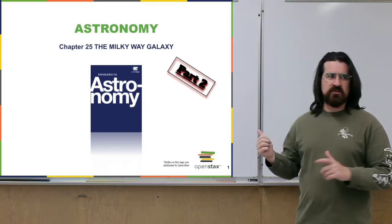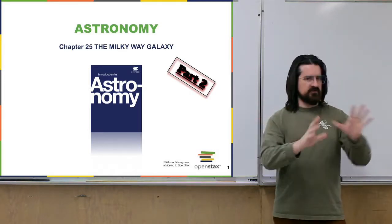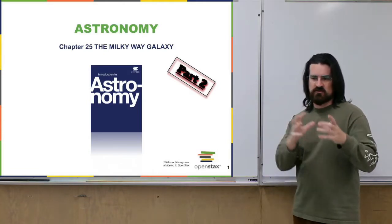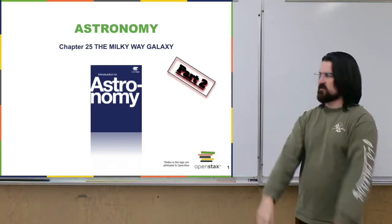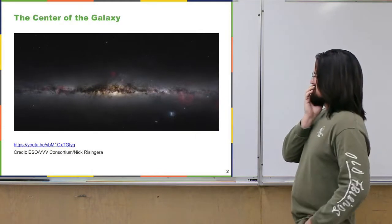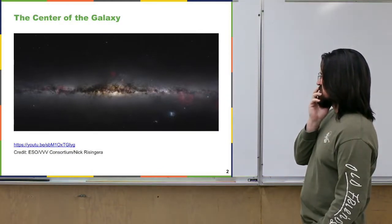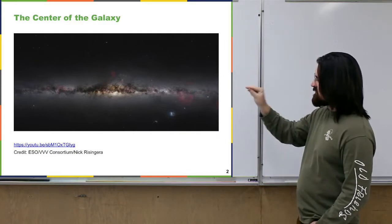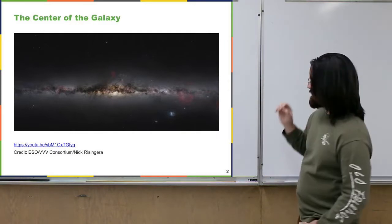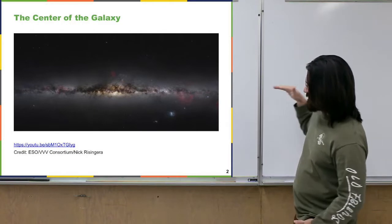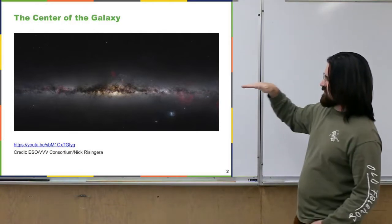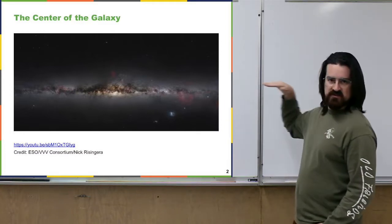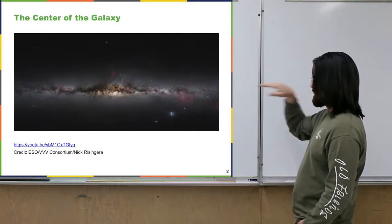We're going to start out by looking at the center of the galaxy — that sort of bulge area, the center where there's a bar. This is an image looking towards the center of the galaxy, and pretty much in the middle of that line is about where the center of our galaxy is. That line where all this material is, the dark stuff and light stuff, that's the plane of the galaxy.